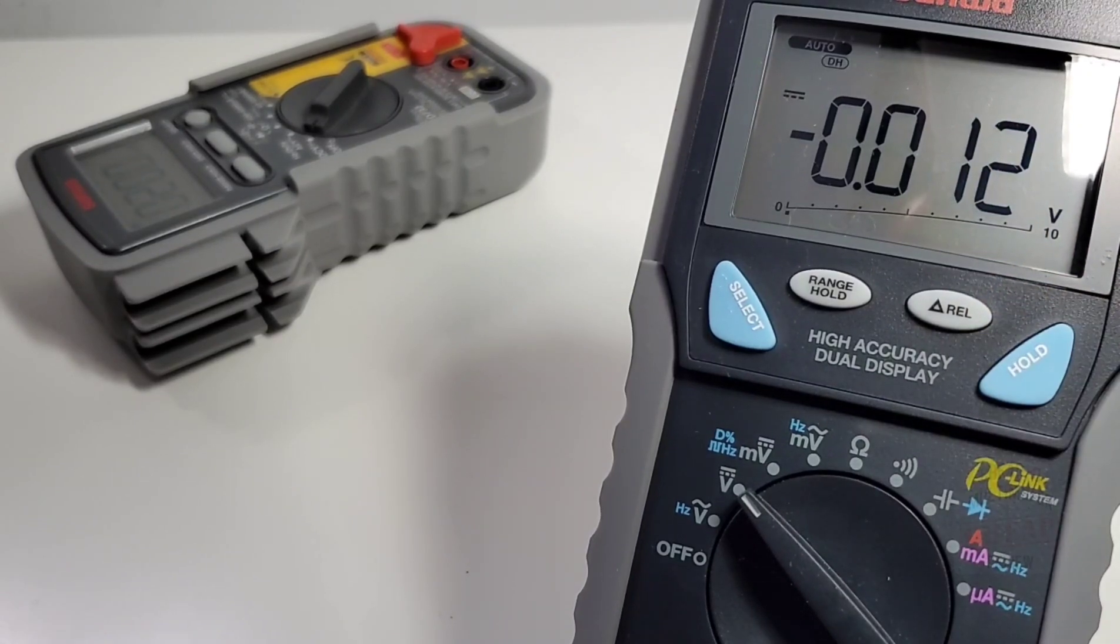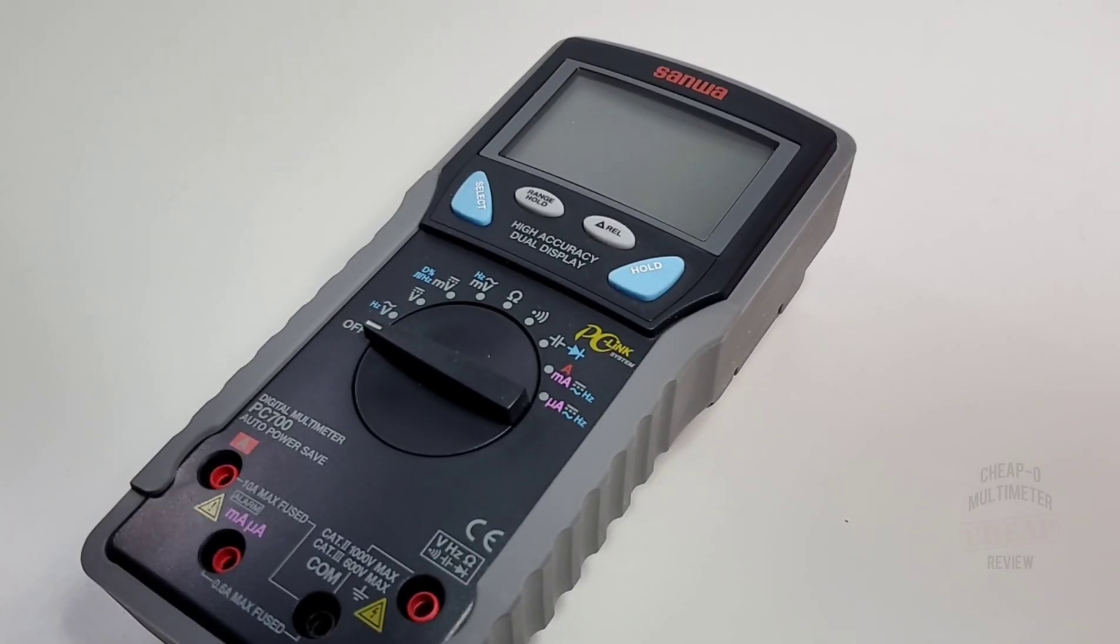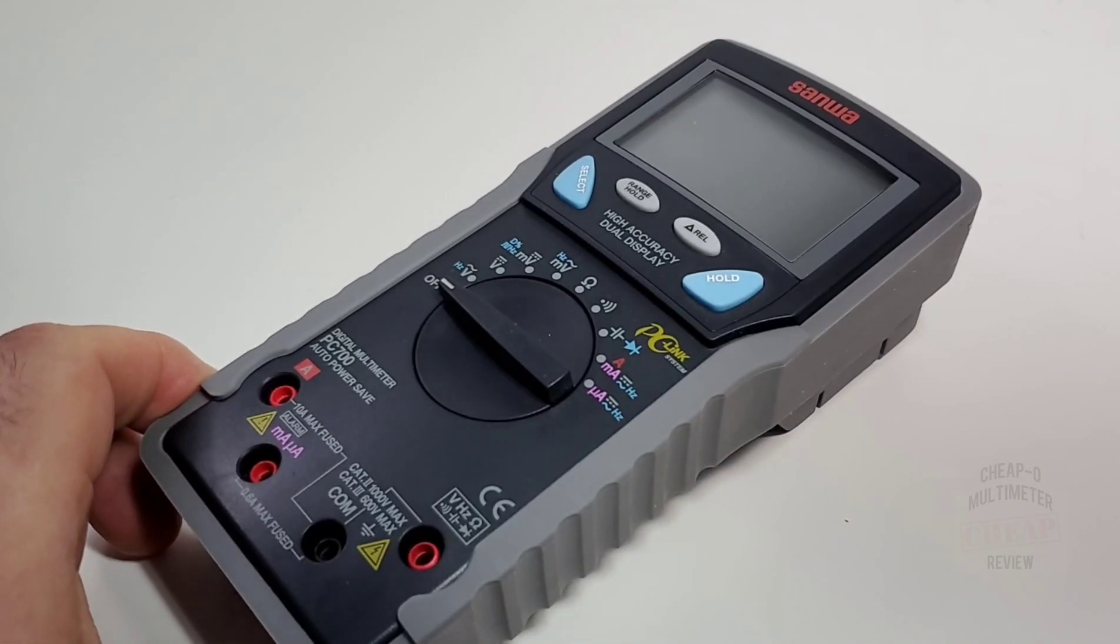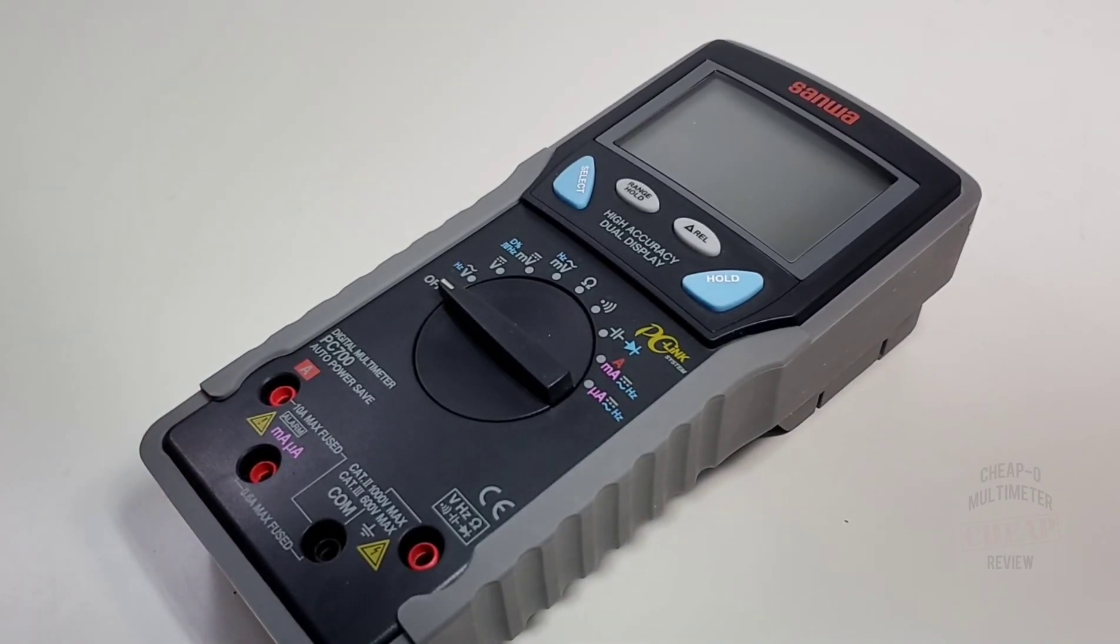Pretty impressive thus far I have to admit. The big brother, the PC 7000, gets all of the attention. This poor little guy is basically left out in the cold, but suffice to say he can really hold his own. Let's take it apart, let's see what's on the inside.